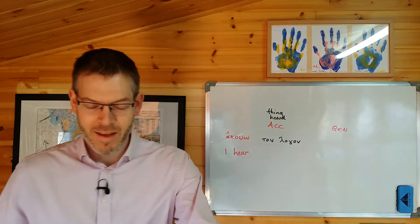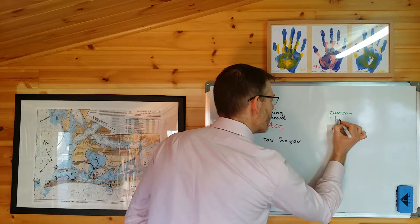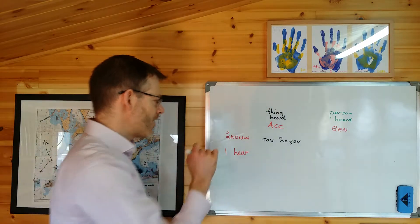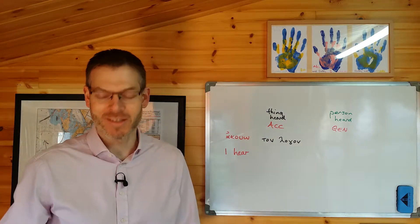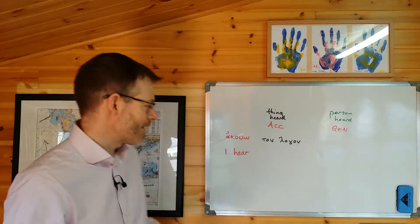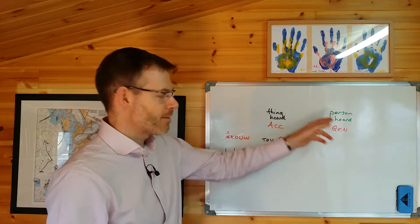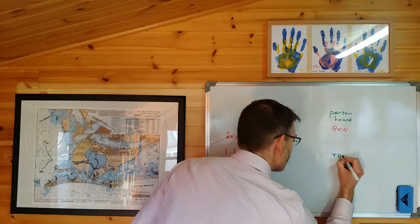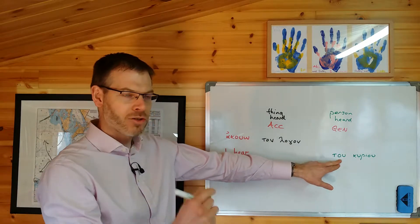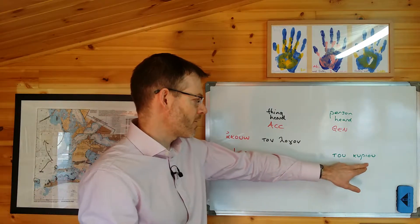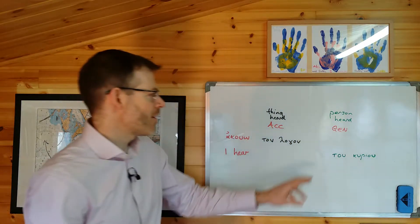What Duff then points out is that the person heard goes not in the accusative but in the genitive. And that feels like a bit of an annoying thing — why can't you just put them both in the accusative and have done with it? Well, there's actually an interesting reason for this. Suppose I want to say 'I hear the Lord' — that's not the thing heard, that's the person heard. So I'm going to put 'tu curiu' in the genitive: nominative, accusative, genitive — curios, curion, curiu. The person heard goes in the genitive.